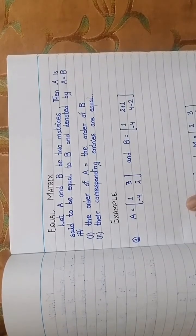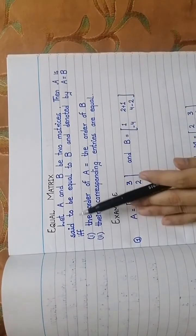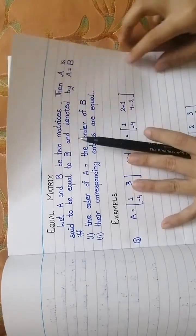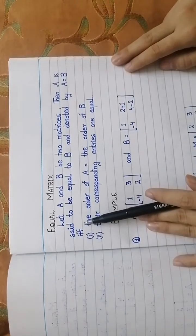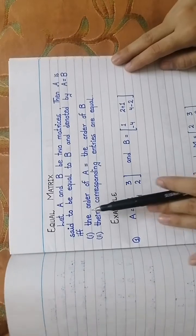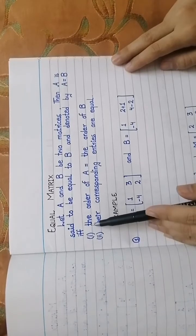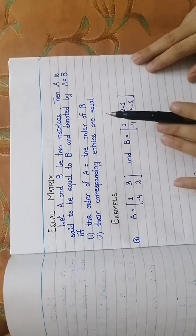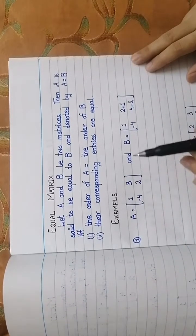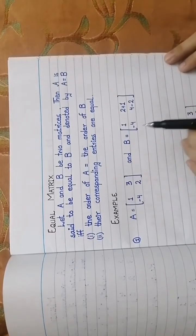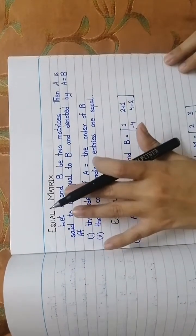Next, we have equal matrices. Let A and B be two matrices. Then A is said to be equal to B, denoted A = B, if and only if two conditions are satisfied: first, the order of A equals the order of B; and second, their corresponding entries are equal. If both conditions are satisfied, the two matrices are equal, otherwise not.